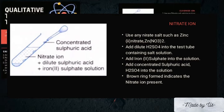For nitrate ion, use any nitrate salt such as zinc nitrate. Then, add dilute sulfuric acid into the test tube containing the salt solution. Add iron(II) sulfate into the salt solution. Then, slant the test tube and add a few drops of concentrated sulfuric acid. Slowly set the test tube upright. A brown ring forming indicates the presence of nitrate ion.